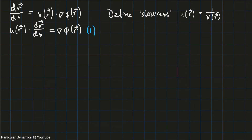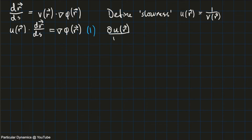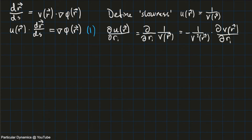I'll do another thing. I'm going to take this definition of slowness and differentiate each side with respect to one of the dimensions of r. Those dimensions could be x, y, or z. I'm just going to use a general term ri when I talk about the general dimension. What we get from that is the derivative of u of r with respect to that general dimension ri, which according to standard differentiation rules gives us this result. I'll label this equation two.